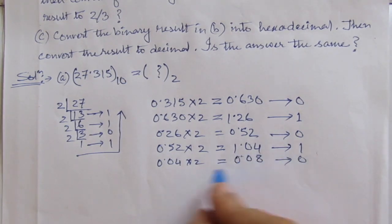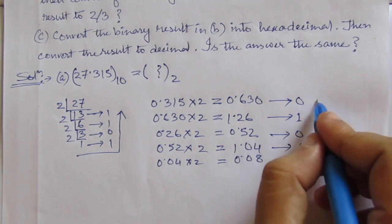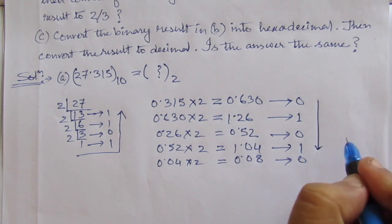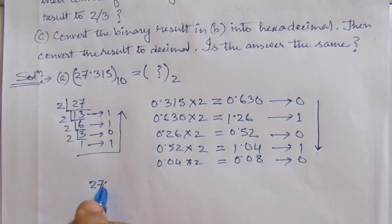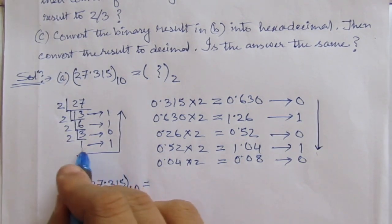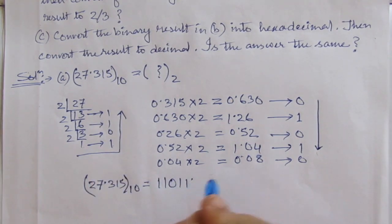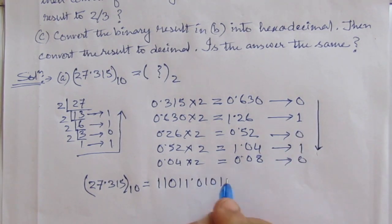Continuing to multiply, if we multiply further by 2 the result cycles to near zero. We consider up to this point — this much is sufficient. Therefore, 27.315 in decimal equals 11101.0101 in binary.